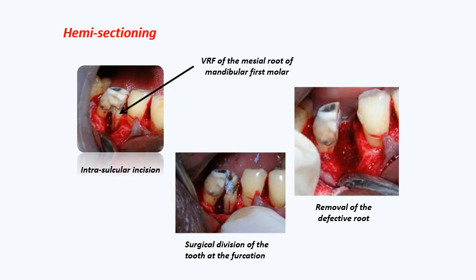Summary of differences: Root amputation is most likely for upper molars — amputation at the junction between the root and the crown, removing the root while part of the crown remains. Hemi-sectioning is for lower molars — cut from the crown through the furcation, removing one full half of the crown and root. Bicuspidization is when there is a furcation problem in lower molars: cut into two halves and maintain both halves, restoring them as two bicuspids.